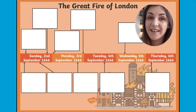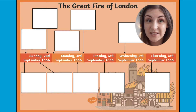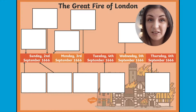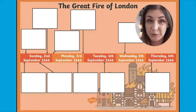Hi everyone, this is our Great Fire of London Timeline Activity. It's a really great visual tool to help children understand the events that took place in the Fire of London, as well as challenge them to put them back into chronological order.